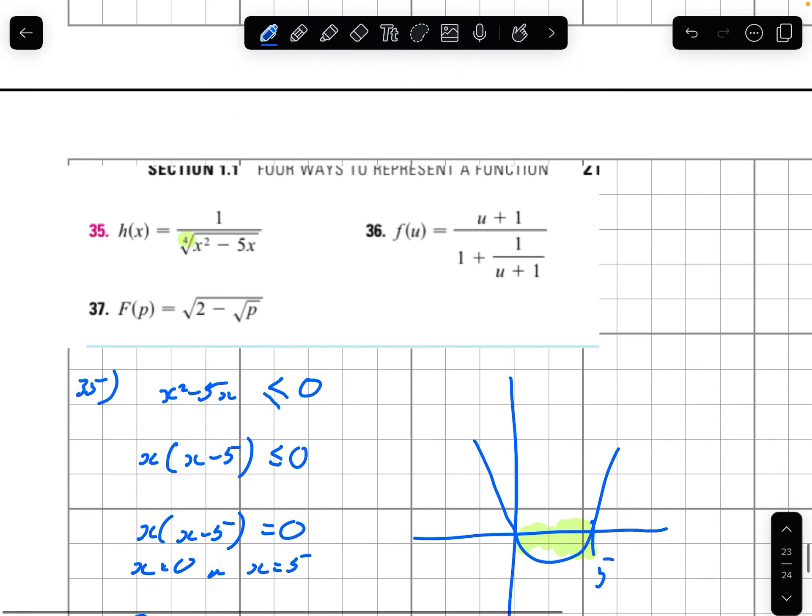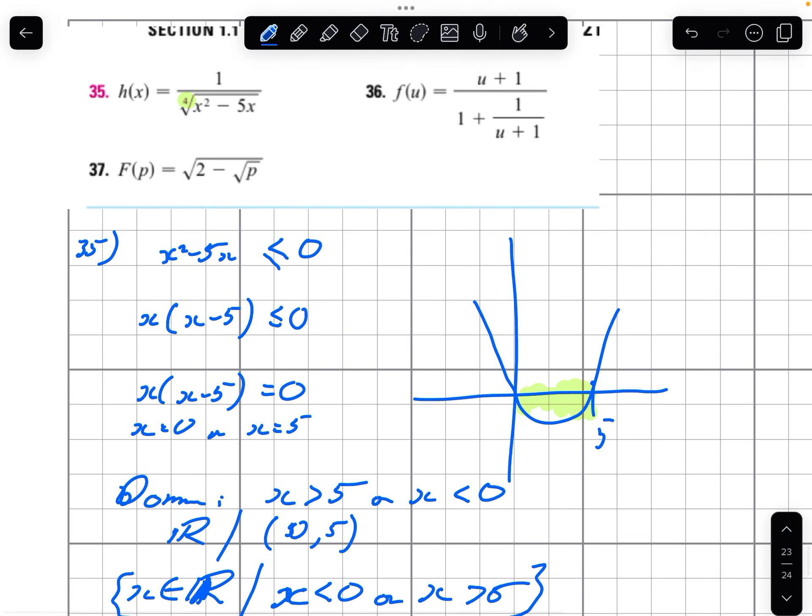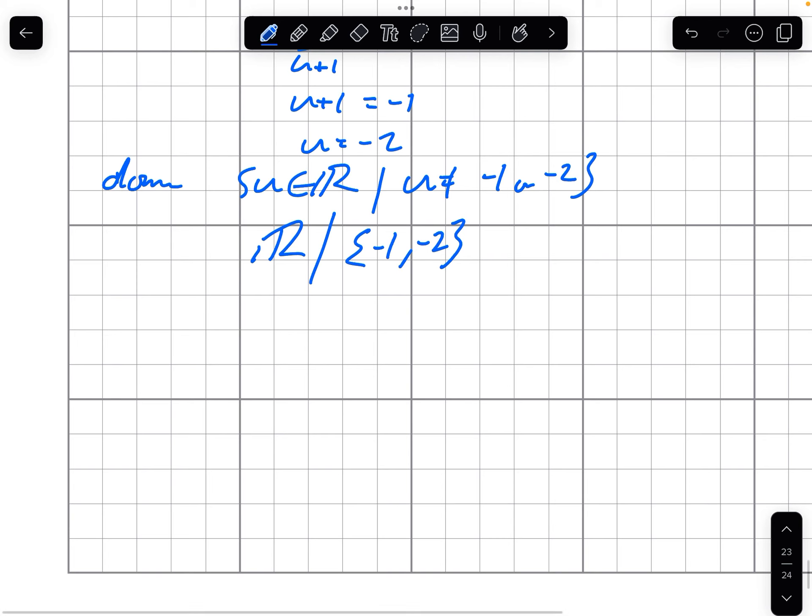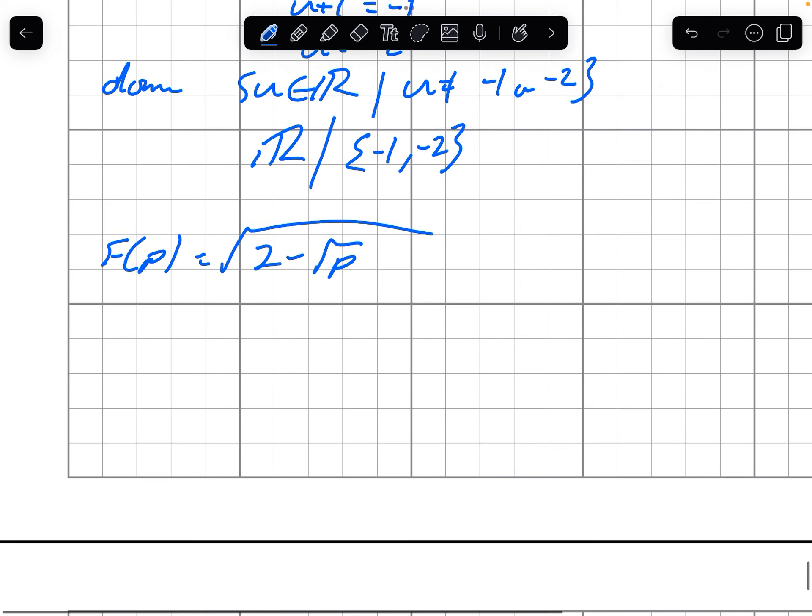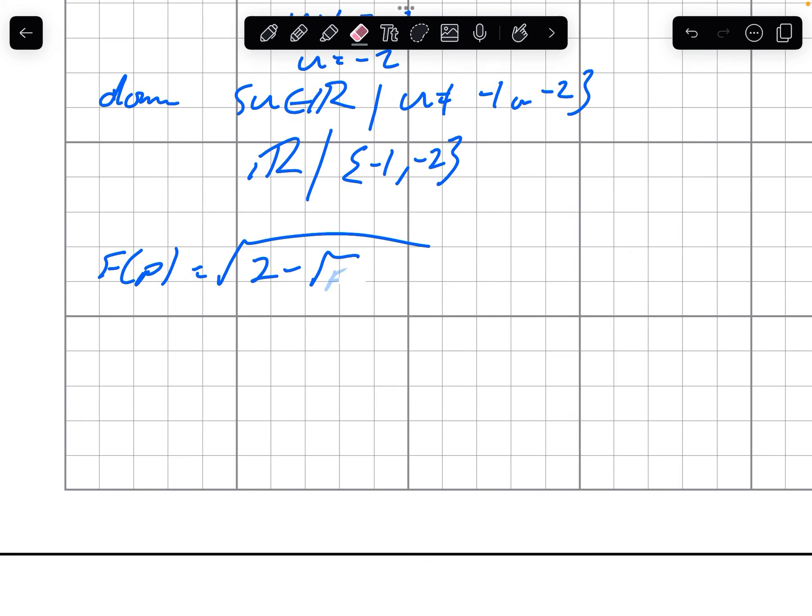Now the final problem. f of p is the square root of 2 minus the square root of p. That's where we're just going to not get a value, or if 2 minus root of p is negative, that's also going to give us a problem.